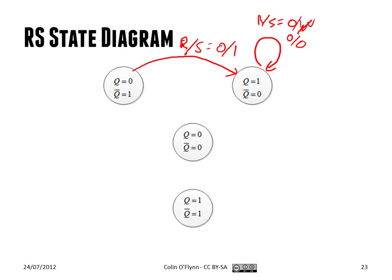If we're in the set state, we can move to the reset state if reset becomes equal to one and set zero. We'll move to the invalid state if reset and set are both one — this is the invalid state because Q is zero and Q complement zero. And we can get out of those states if RS goes to zero once. If set becomes one, we move from the invalid state out.